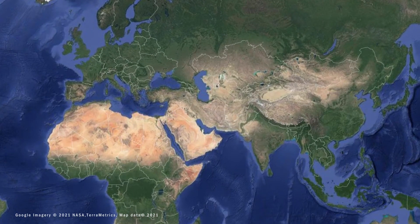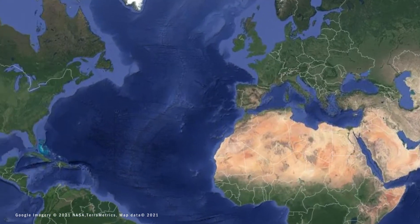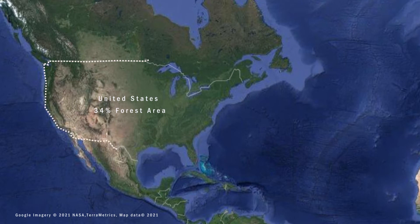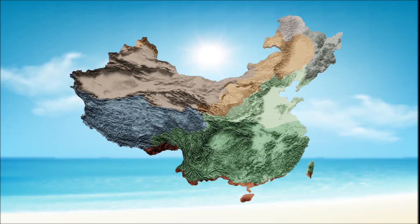China has 2.2 million square kilometers of forest area, with a coverage rate of 23%. The US's forest area is about 3.1 million square kilometers, with a coverage rate of 34%. The US dominates in forest coverage.